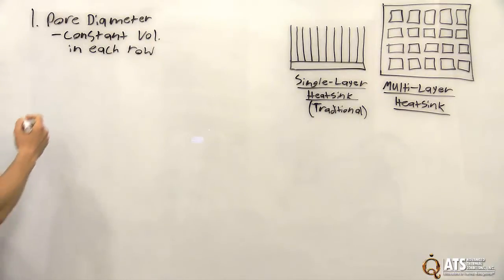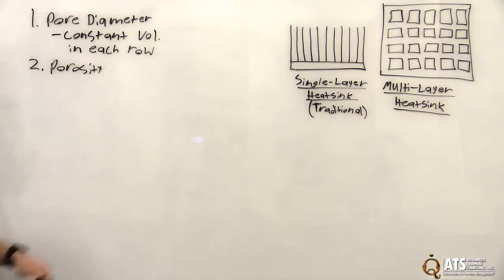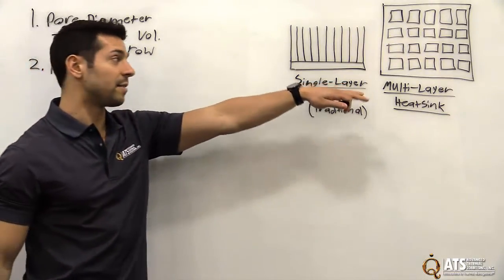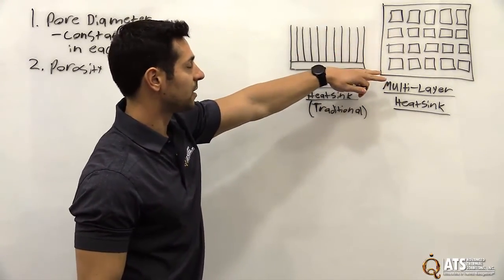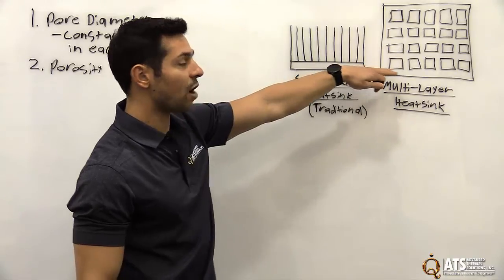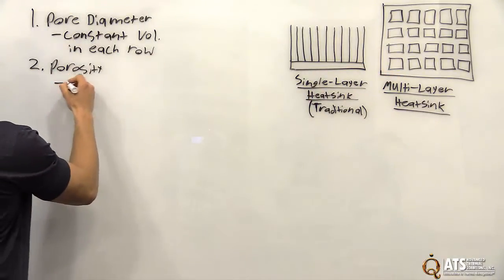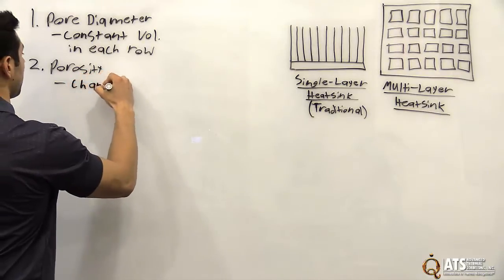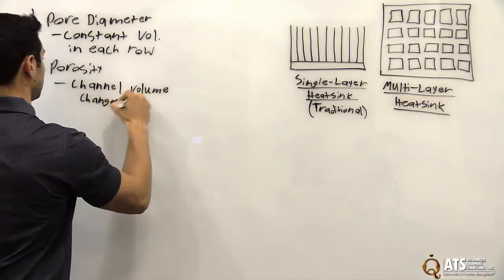Okay, and our second scaling principle is porosity. Now with porosity, the pore diameter stays the same for each channel, but as you increase or decrease from the heated surface, your channel volume changes. So again, channel volume changes per row.